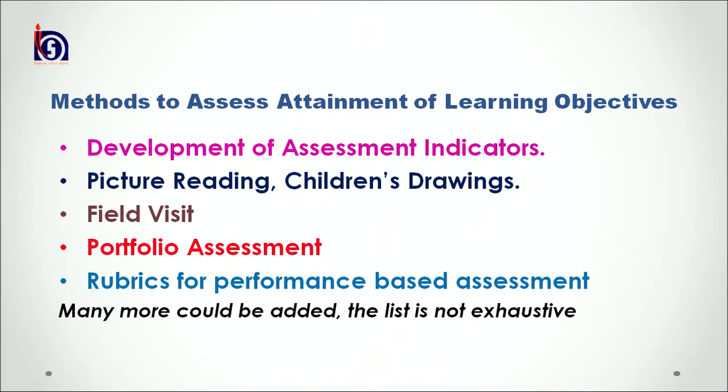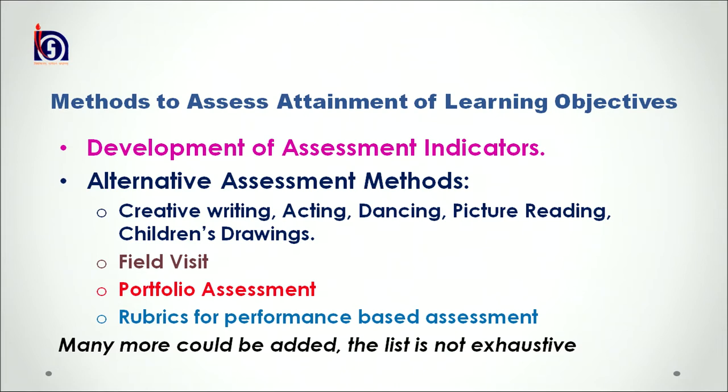Alternative methods for assessing attainment of learning objectives include creative writing, acting, dancing, picture reading, children's drawing, field visit, portfolio assessment, and rubrics for performance-based assessment. This list is not exhaustive. The key method is development of assessment indicators. We want children to learn social science by developing different kinds of skills, conceptual knowledge, feeling and sensitiveness. A broad list of indicators for assessment can help teachers plan learning tasks, and each indicator consists of abilities that need to be developed in children.